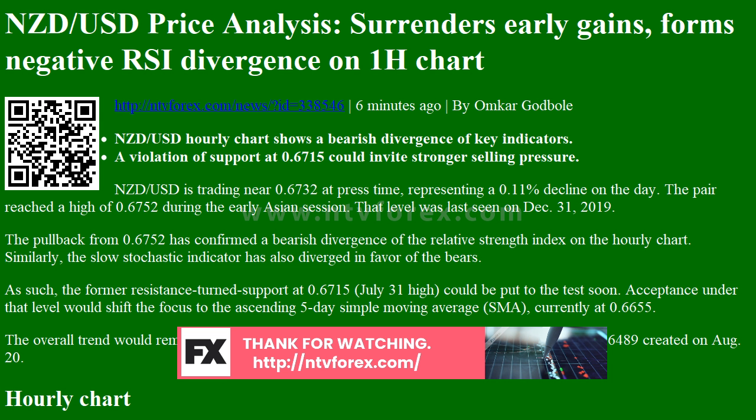The pullback from 0.6752 has confirmed a bearish divergence of the Relative Strength Index on the hourly chart. Similarly, the slow stochastic indicator has also diverged in favor of the bears.